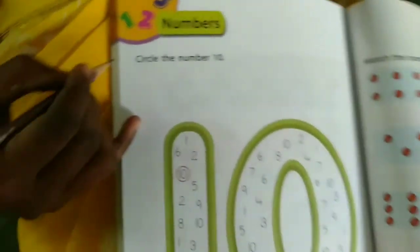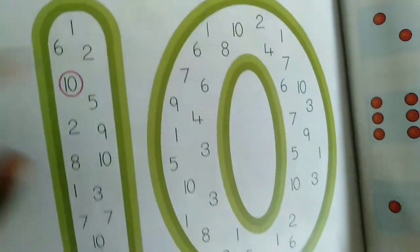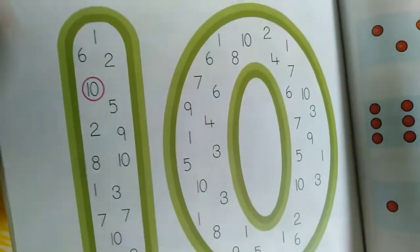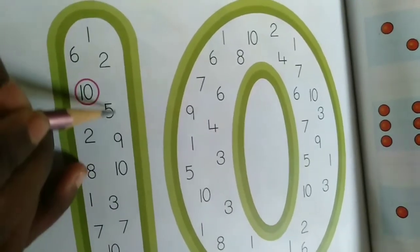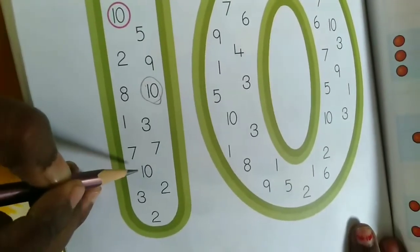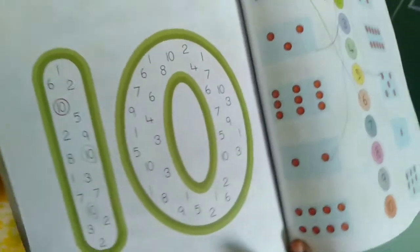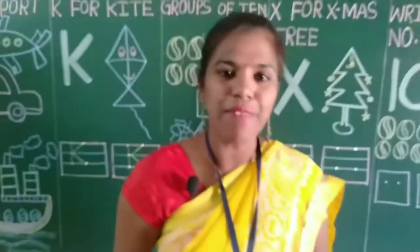And again, circle the number ten. We have to search for number ten and make a circle. See where is number ten — yes, this is number ten. Make a circle. In this way, you have to complete page number 131 and 132. Students, you have to complete this book.